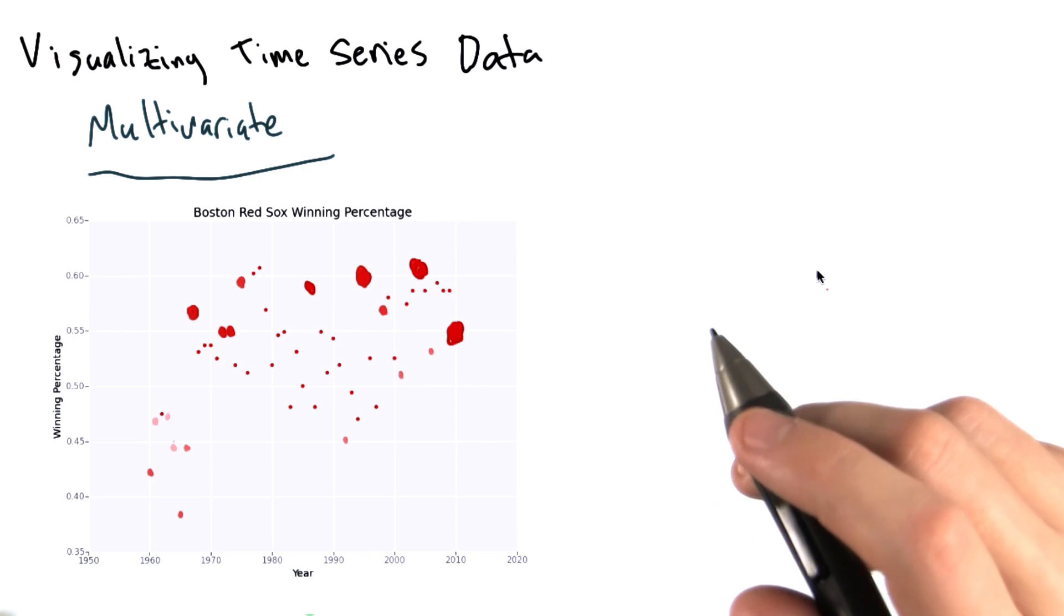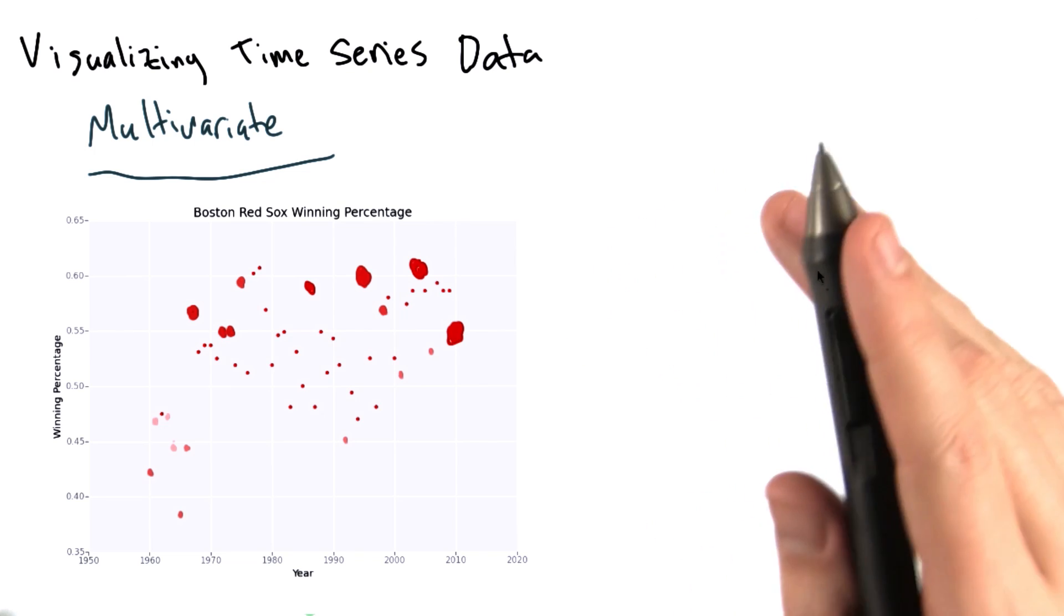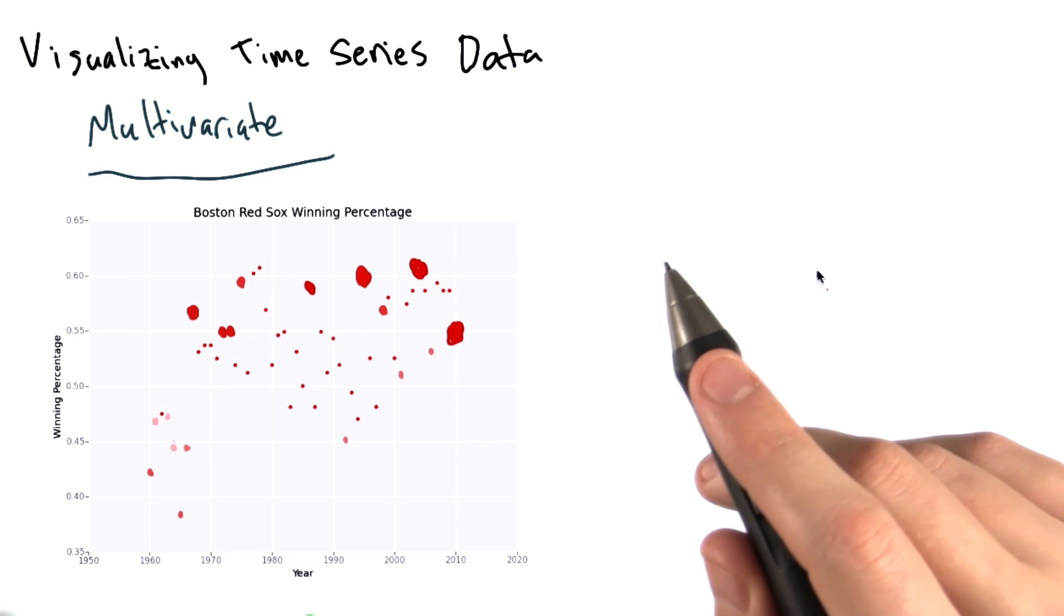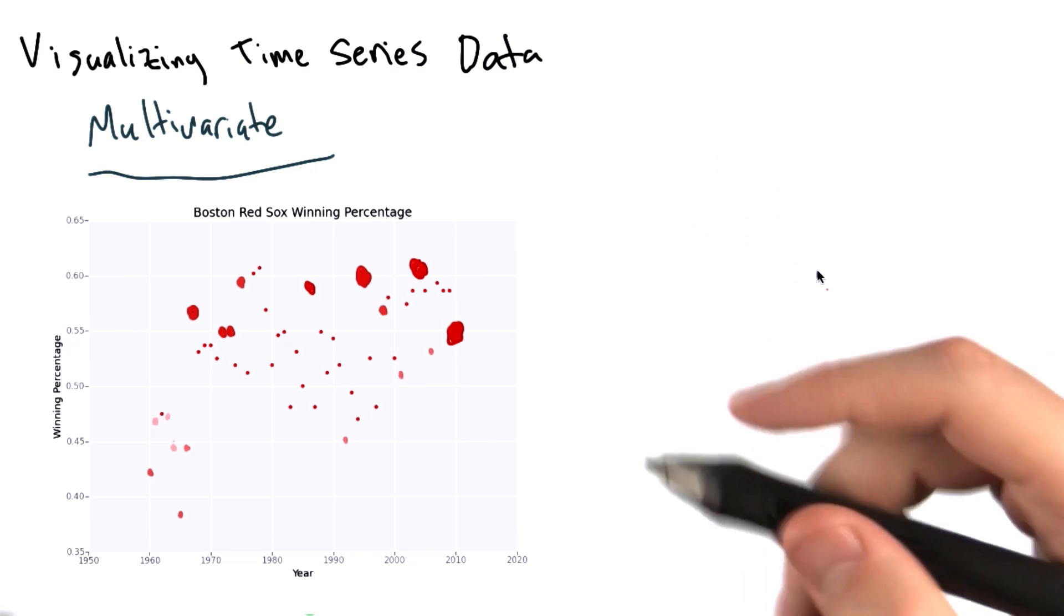But what if we wanted to do a slightly more complex analysis to try to understand what is driving that winning percentage? We'd have to incorporate more variables, but how?